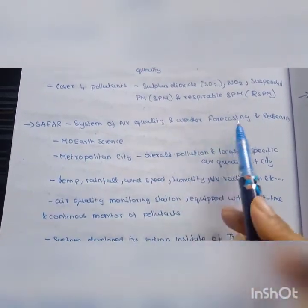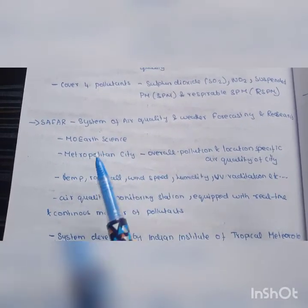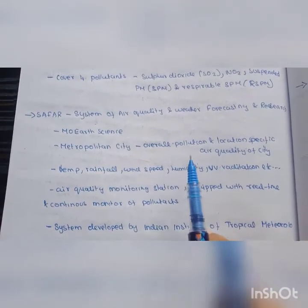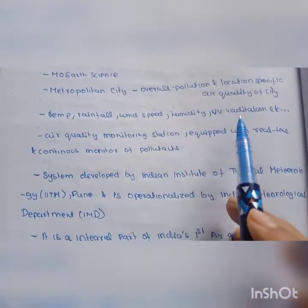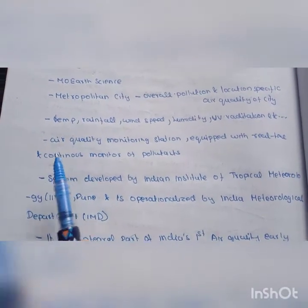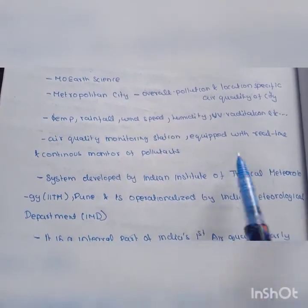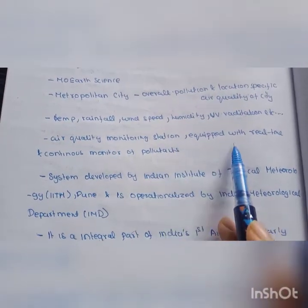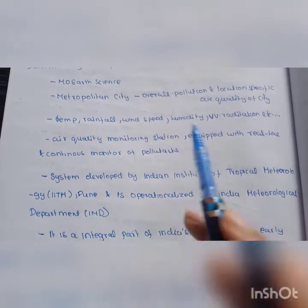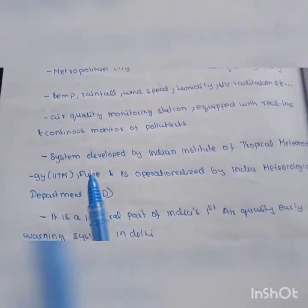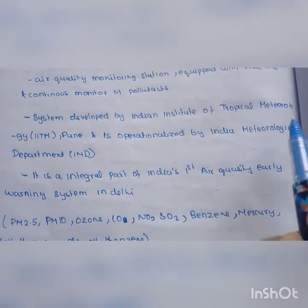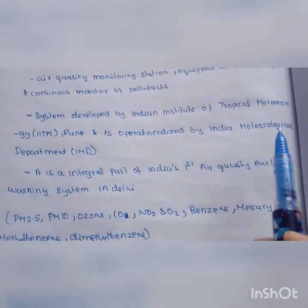System of Air Quality and Weather Forecasting and Research (SAFAR) by Ministry of Earth Science for main metropolitan cities. Overall pollution and location specific data. Parameters include temperature, rainfall, wind speed, humidity, and UV radiation. Air quality monitoring stations for continuous pollution monitoring.